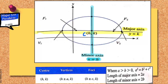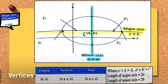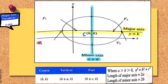Let us go to the next point, which is your vertices. Vertices are the endpoints which cut through your major axis, so you should have two vertices: V1 and V2. It doesn't matter whether you name the left-hand side as V1 or the right-hand side as V1 — the most important thing is that if you name one vertex V1, the other should be V2.